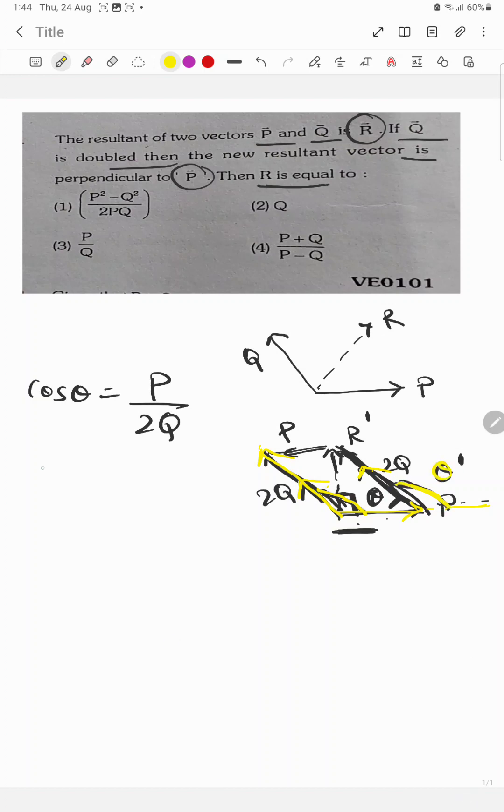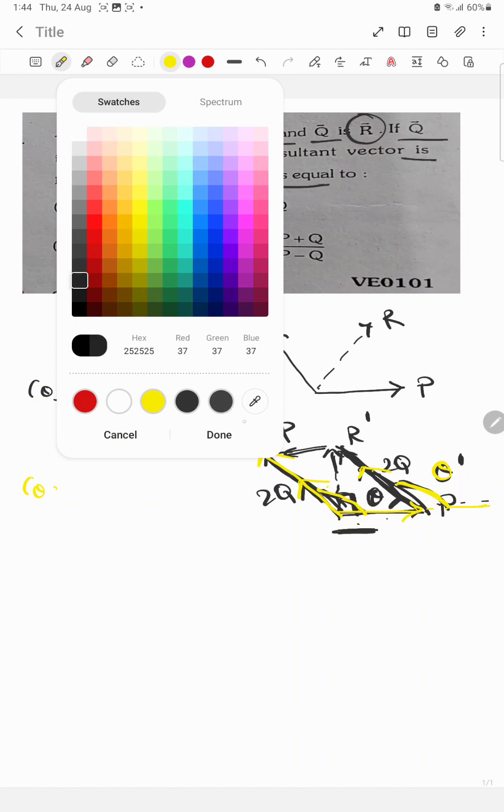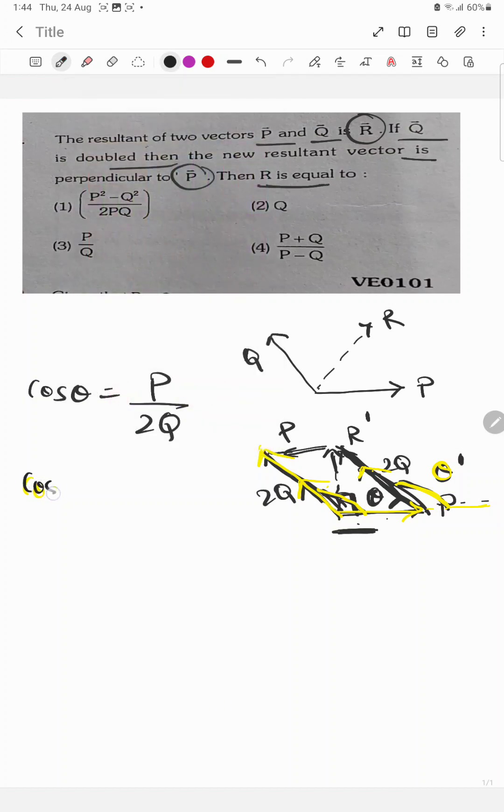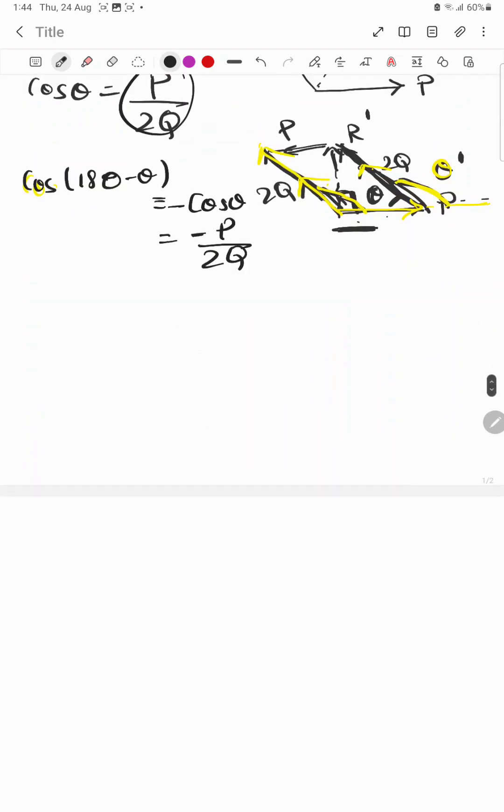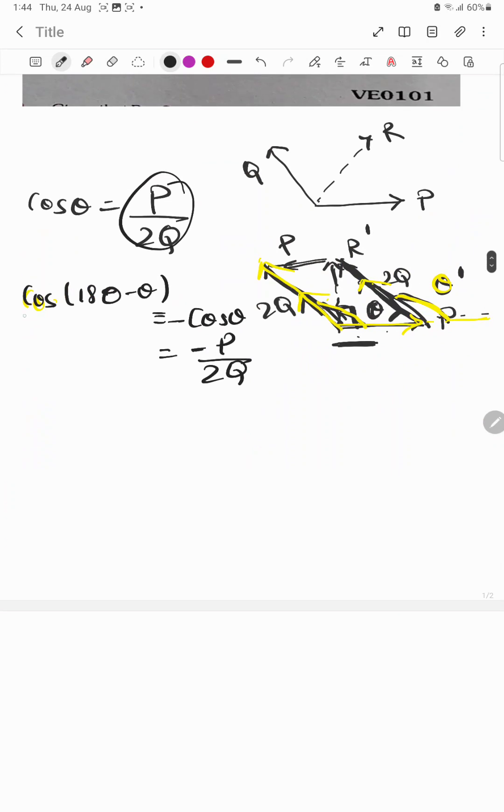This theta dash will be equal to 180 minus theta. As we know, cos(180 - theta) equals minus cos theta. So cos theta here is P upon 2Q, so minus P upon 2Q will be cos(180 - theta), this angle.